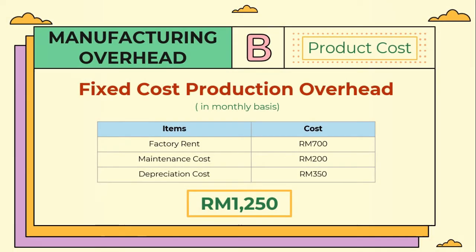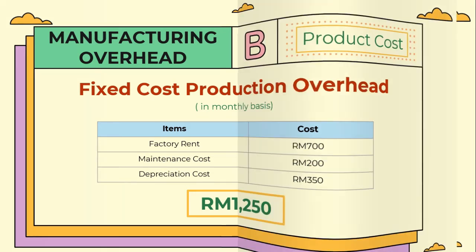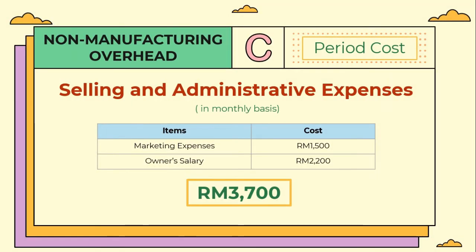The last category in product cost is the fixed cost production overhead, which costs 1,250 ringgit for one month. We now move on to period cost, also known as non-manufacturing overhead. The cost of selling and administrative expenses on a monthly basis would be 3,700 ringgit.